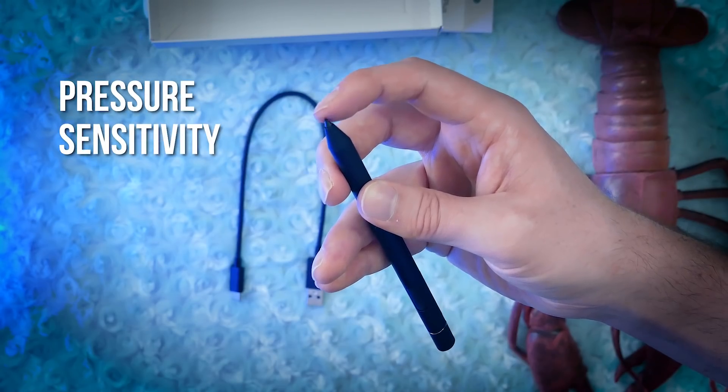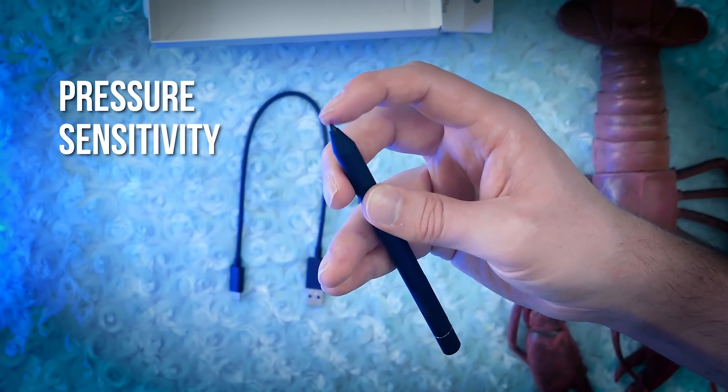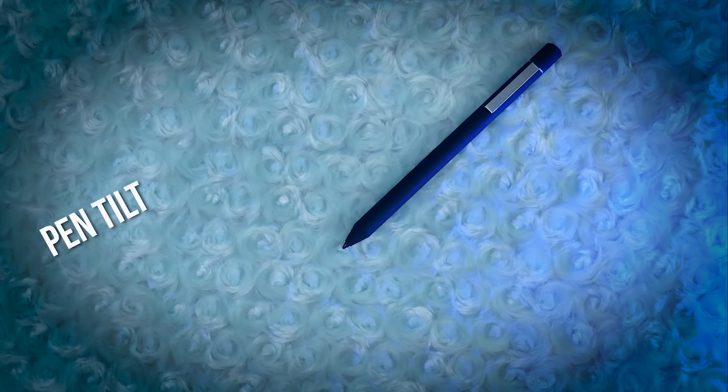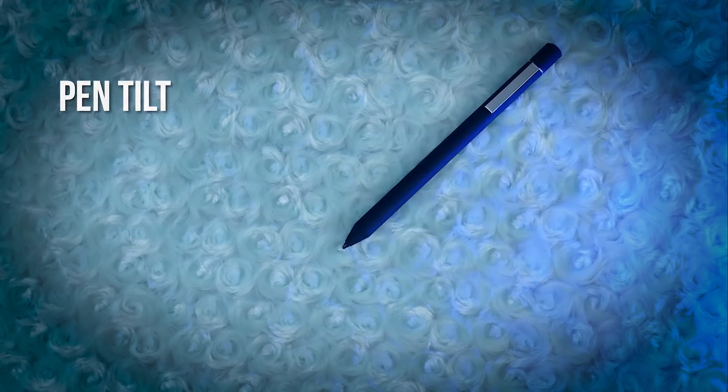The Bamboo Ink Plus supports pen pressure to change your line width or opacity. You can also tilt the pen to change the angle of your marks for devices that support pen tilt.